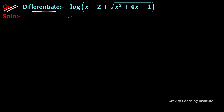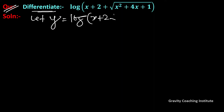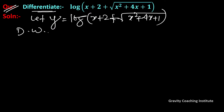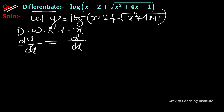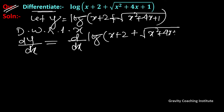The question is to differentiate log(x + 2 + √(x² + 4x + 1)). First, let y equal to log(x + 2 + √(x² + 4x + 1)). Now differentiate with respect to x, so dy/dx equals the differentiation of log(x + 2 + √(x² + 4x + 1)).